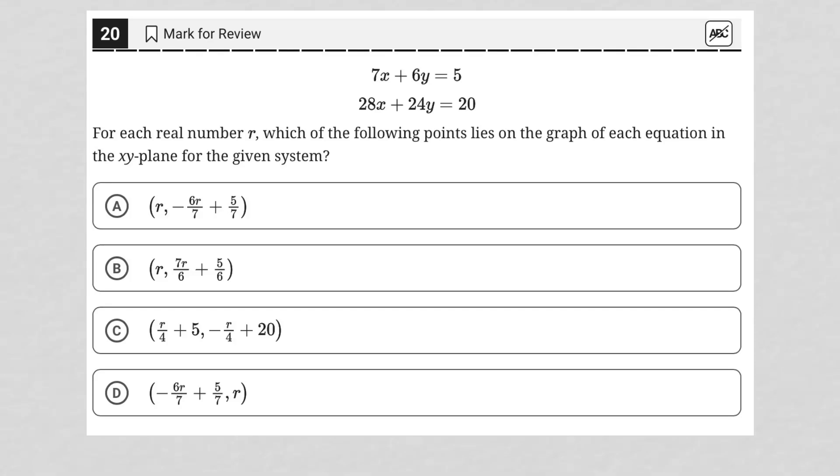So this question starts off by providing us with a system of equations. It goes on to say for each real number r, which of the following points lies on the graph of each equation in the x-y plane for the given system?